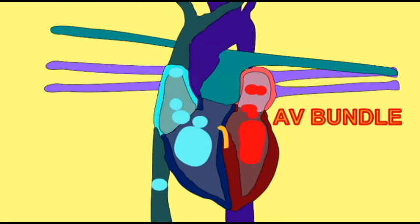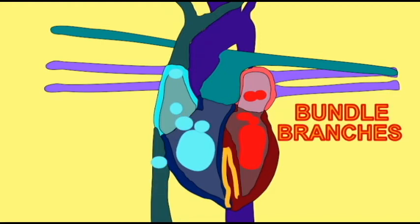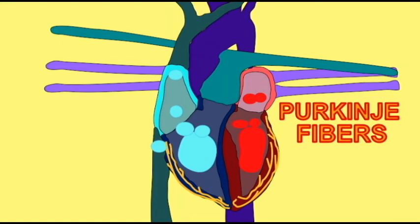After the delay at the AV node, the message to contract will reach the ventricles after passing through the AV bundle in the septum between the left and right ventricles, and from there into the left and right bundle branches, and from there into the Purkinje fibers or conduction myofibers which will carry this message to contract to the muscles which make up the walls of the ventricles.